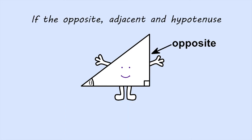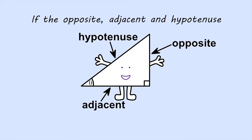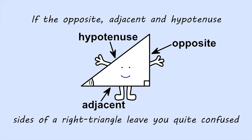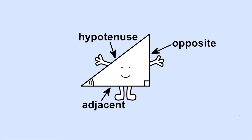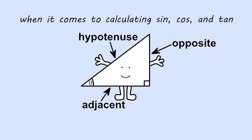If the opposite, adjacent, and hypotenuse sides of a right triangle leave you quite confused when it comes to calculating sine,